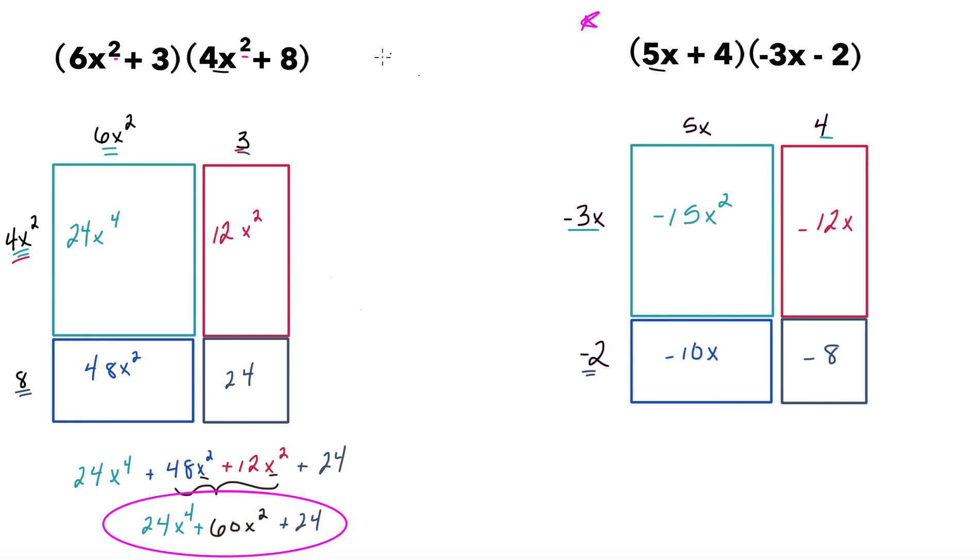Like I mentioned in the last example, we found each of the individual components, but now it's time to put them all together. The first term would be negative 15x². We're going to write negative 12x, then negative 10x, and finally negative 8. Like the last problem, we do have some like terms that we can combine. These middle two x terms would combine to negative 22x. The constant term remains minus 8, and the first term is negative 15x².